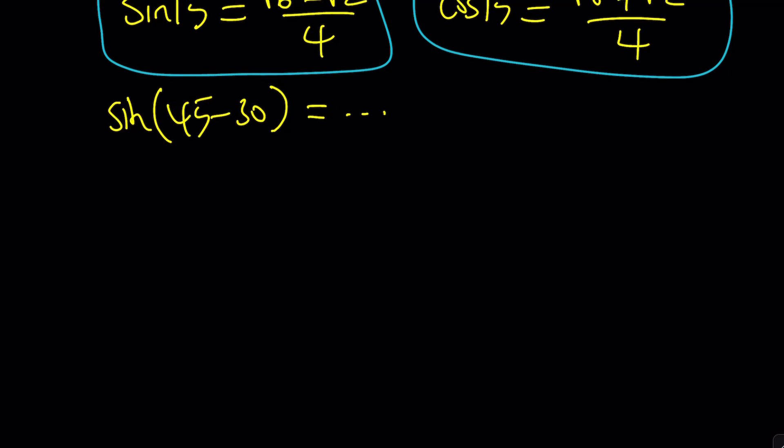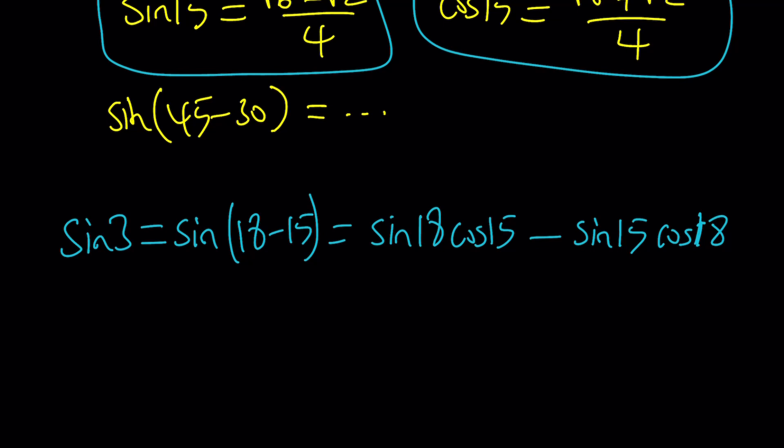I'm looking for sine of 3 degrees. This is equal to sine of 18 minus 15. And the formula says sine A cosine B minus sine B cosine A, or cosine A sine B. Now, we got the values. Let's go ahead and plug them in.